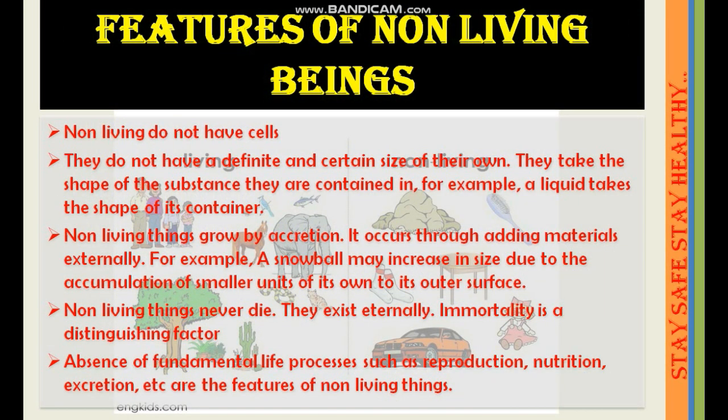Similarly, we have features of non-living beings. They are summarized as below. Non-living things do not have cells. They do not have a definite size of their own; they take the shape of the substance they are contained in. For example, a liquid takes the shape of its container. Non-living things grow by accretion, occurring through adding materials externally. For example, a snowball may increase in size due to accumulation of smaller units on its outer surface.